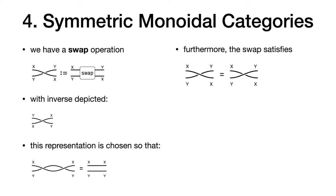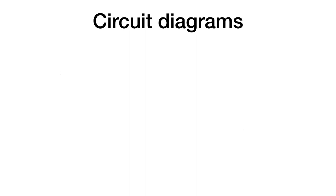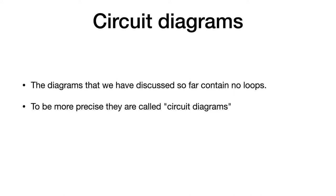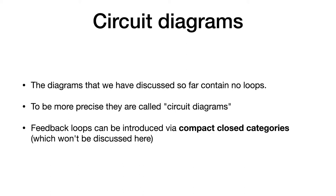In a symmetric monoidal category, the swap satisfies the equation that doing the swap twice gives back the identity — two plain wires. The diagrams discussed so far contain no loops and are normally called circuit diagrams. Feedback loops can be introduced by using compact closed categories. The moral is that there's a zoo of different extensions to the basic monoidal category definition, and depending on the application, you can reach out to different cases.